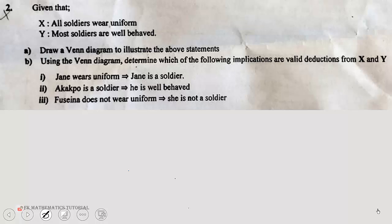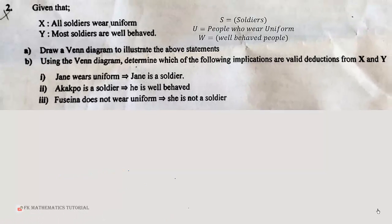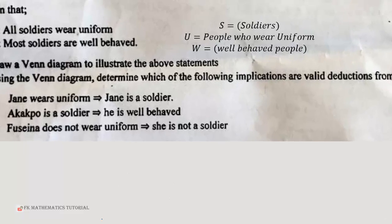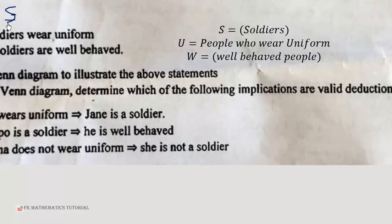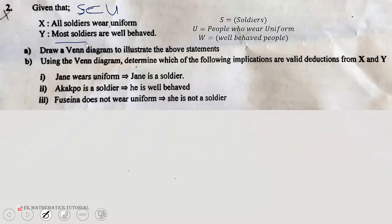Let's analyze the statements carefully. Statement X says all soldiers wear uniform — so if we use S to represent soldiers, then soldiers will be a subset of those who wear uniform (U). Statement Y says most soldiers are well behaved, which means there is an intersection between those who are soldiers and those who are well behaved (W).